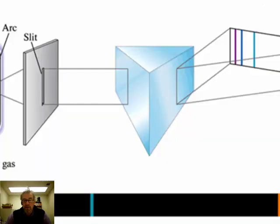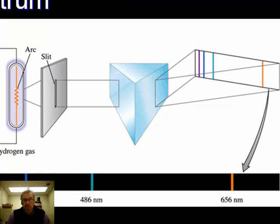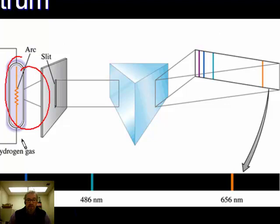This always happens: light from pure elements shows a spectrum of limited colors, called an atomic line spectrum. Each color corresponds to a wavelength. If you put hydrogen, neon, or any element in a container, discharge electricity through it, pass that light through a slit and then a prism, you don't get a rainbow — you get a line spectrum.